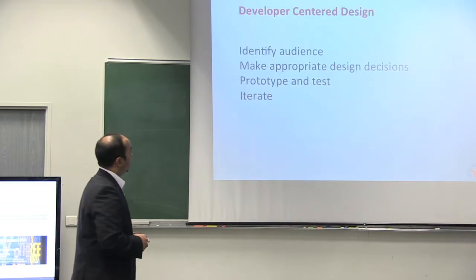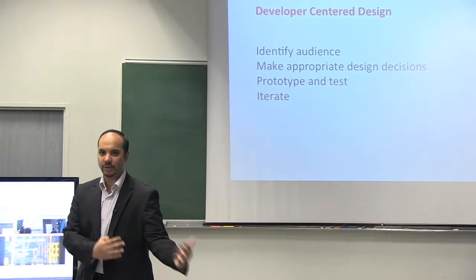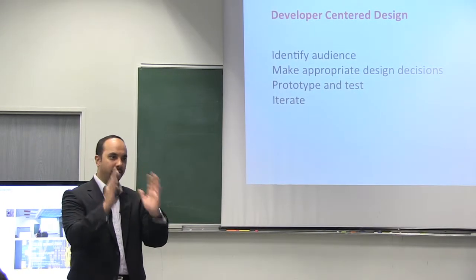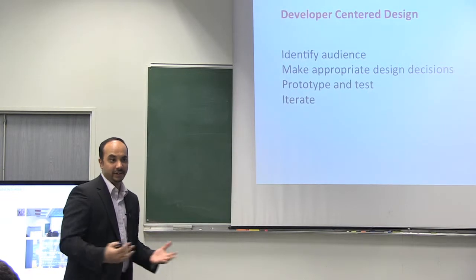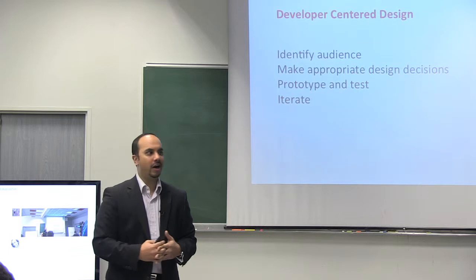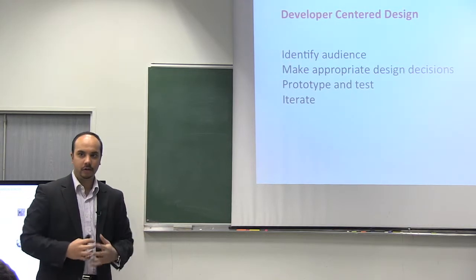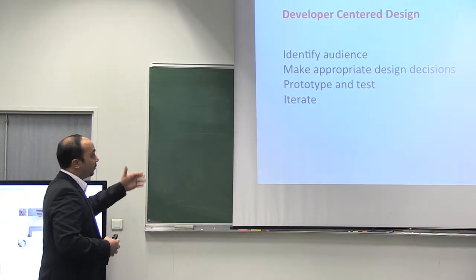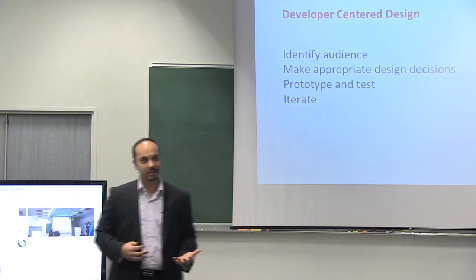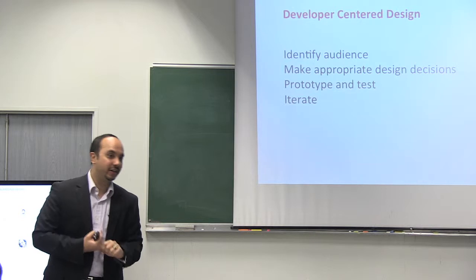We've been working on this internally at Layer 7, trying to establish what we can take from UCD and put together so that API designers can think in the right way from the beginning. It involves starting by identifying your audience — figure out who you're making this API for. If you build the API with a user base and platforms in mind, you can start making appropriate design decisions, choosing your architecture based on usage, and ultimately doing rapid prototyping, testing, and changing it as necessary.